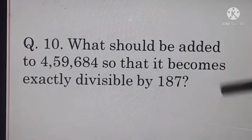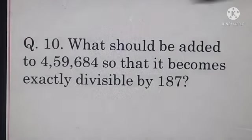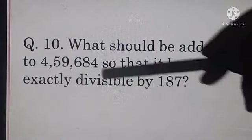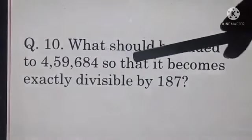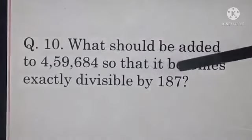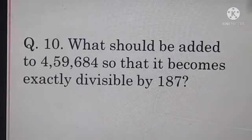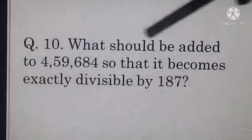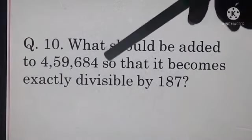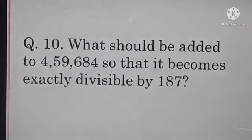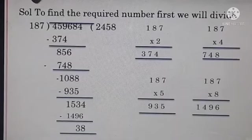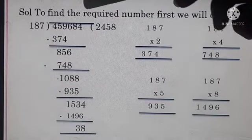Now here is our next question, question number 10. What should be added to 4,59,684 so that it becomes exactly divisible by 187? From the question we know that this number is not exactly divisible, because the question asks what should be added to this given number. To find the required number, first we will divide.